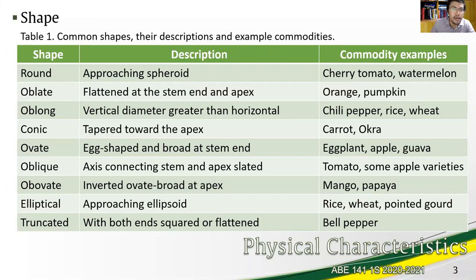Oblate flattened at the stem end and apex we have orange and pumpkin. Oblong vertical diameter is greater than the horizontal we have chili pepper rice and wheat. Conic which is tapered toward the apex we have carrot and okra or lady fingers.